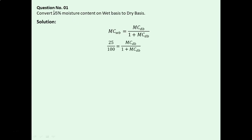So we will convert this 25% to fraction form, and then we will cross-multiply. After cross-multiplying and simplifying, we will get MCDB equals 0.3333.